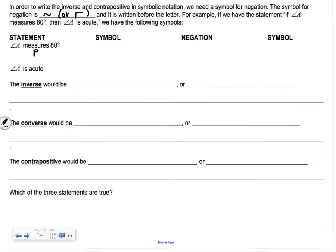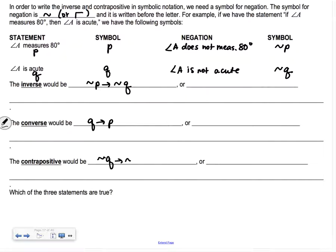We would let angle A measures 80 be our P. Our negation would be not P, and the negation would be angle A does not measure 80 degrees. Angle A is acute, that's our Q, and our negation would be angle A is not acute. In symbols, it would look like not Q. So the inverse in symbols would be not P implies not Q, which would read if angle A does not measure 80 degrees, then angle A is not acute.